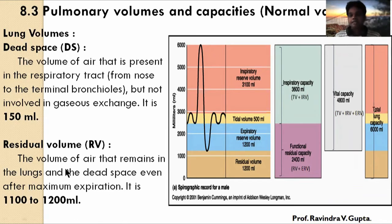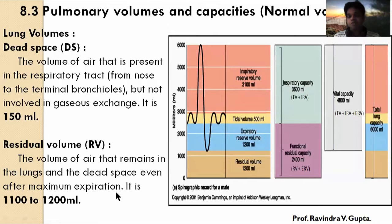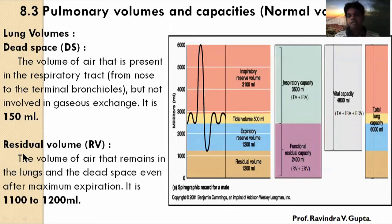The next part is Residual Volume. The volume of air that remains in the lungs and the dead space even after expiration is called Residual Volume. Its value is 1100 to 1200 ml.